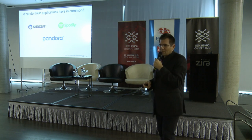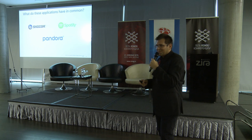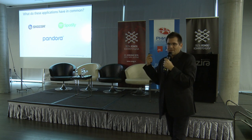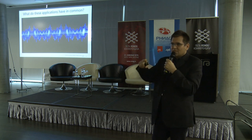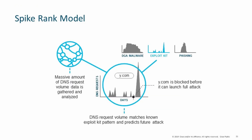Have you heard about applications like Shazam and Pandora? They deal with voices, songs, and different audio things - and this type of recognition is useful for us as well. Believe it or not, if you see the pattern of DNS requests, it helps a lot. The model is called the spike rank model. Even domain generation algorithms show this kind of pattern. If you see exploit kits you see spikes, and phishing shows its own pattern. Even just how DNS request patterns look is more than enough for recognition.